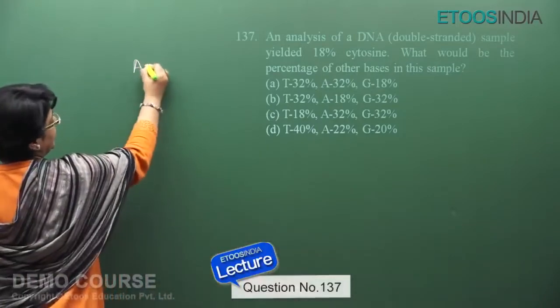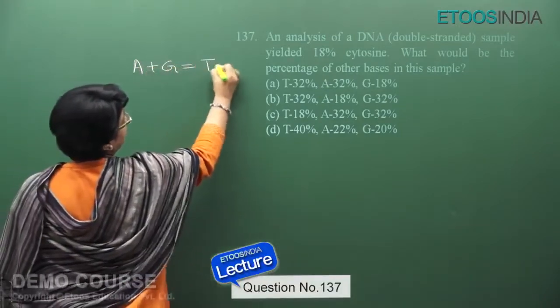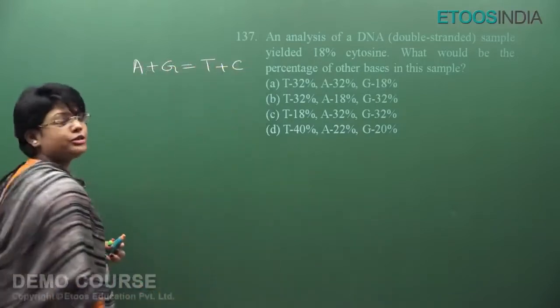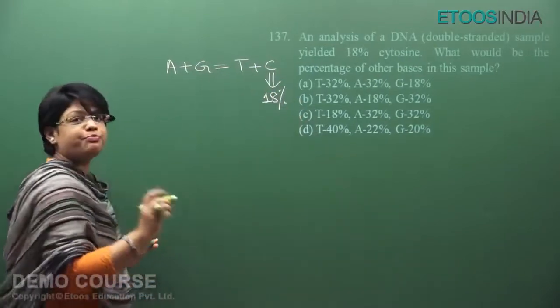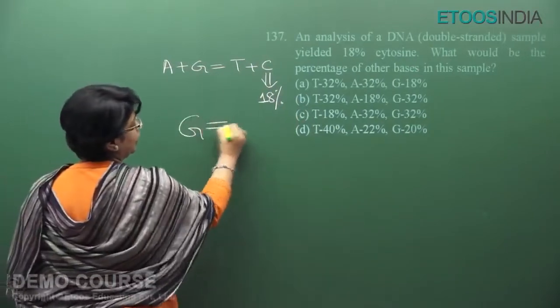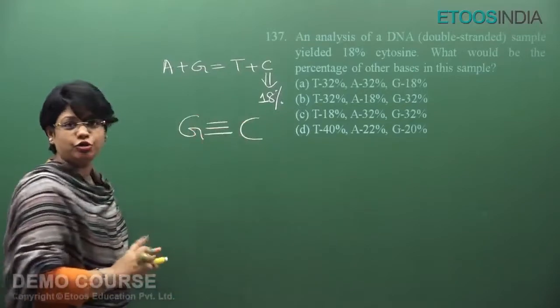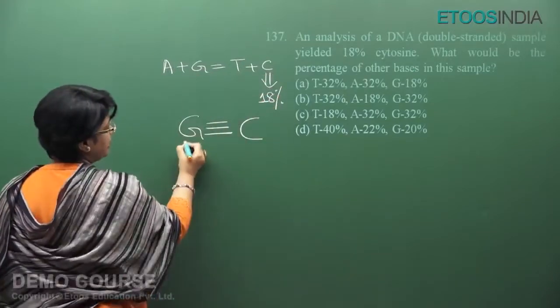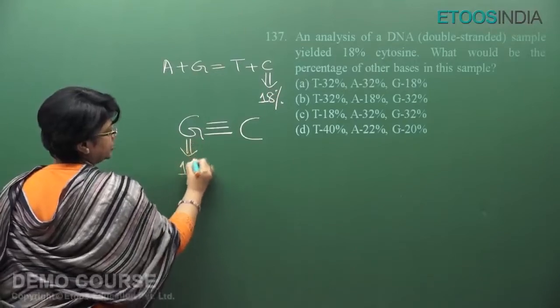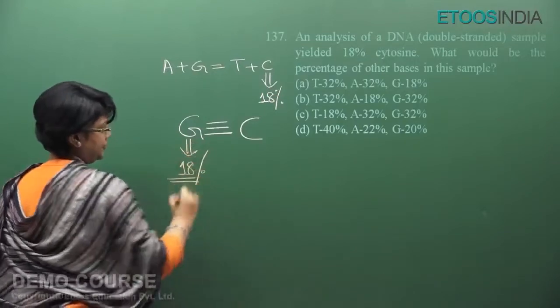According to Chargaff's Rule, A plus G equals T plus C. Cytosine is 18%, and we know that cytosine always pairs with guanine by triple hydrogen bond. If cytosine is 18%, then guanine will be 18%.